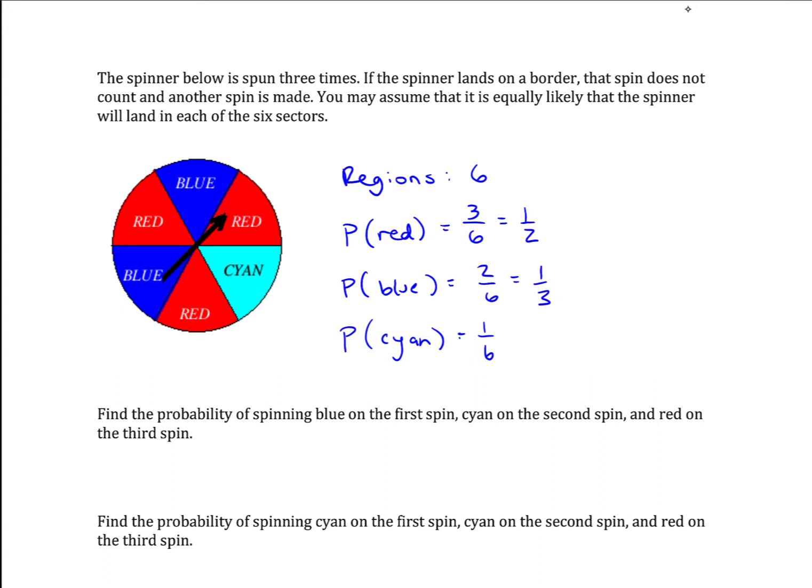So the probability of spinning blue on the first spin, it's one out of three chance. Cyan on the second.